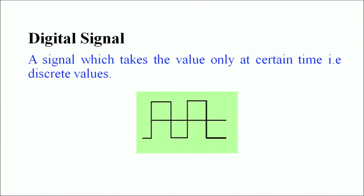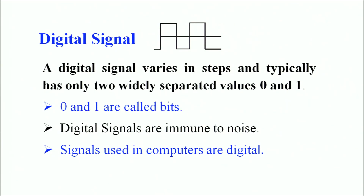Let's talk about digital signals now. A digital signal is a kind of signal which takes discrete values — it takes values in the form of 0 and 1. Looking at this signal, you can clearly see that sometimes the signal takes the value 0 and for other time durations, the signal takes the value 1. A digital signal always varies in steps and typically has two widely separated values of 0 and 1. These 0s and 1s are called bits. Digital signals are immune to noise and are primarily used for computers and computer networks.